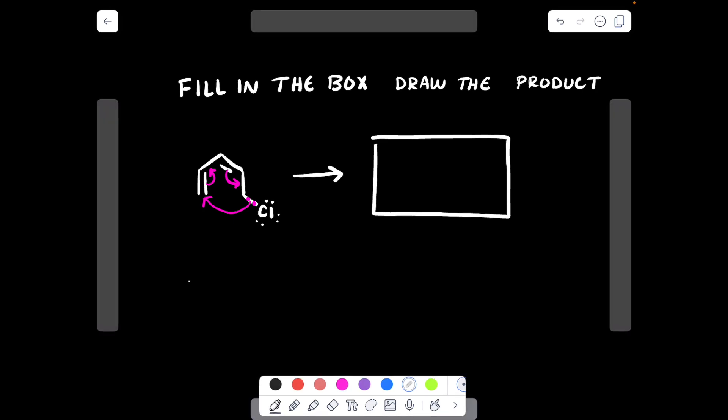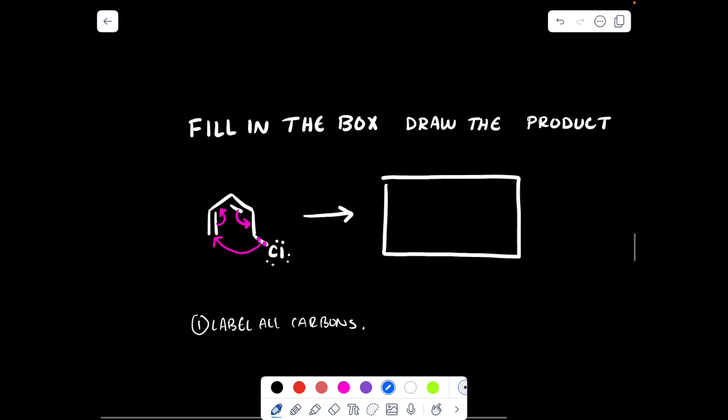Step one, the question says fill in the box, draw in the product. I want to label all my carbons. Okay, so let's say this is carbon one, two, three, four, five. Now the backbone of my structure looks to me as if it stays the same, so I'm going to draw those five carbons in the same arrangement as they were in the starting material.